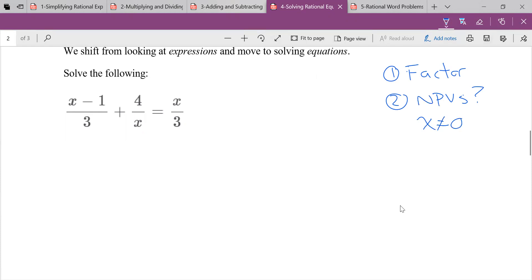So guess what? Step three, let's find that common denominator. I'm just writing CD because I'm lazy. Okay, common denominator. Well, in this case, it's going to be just 3x.